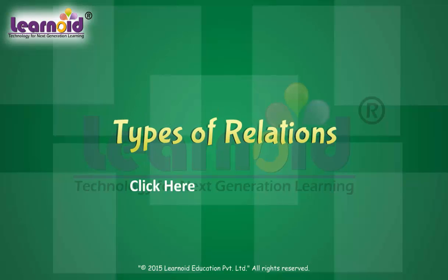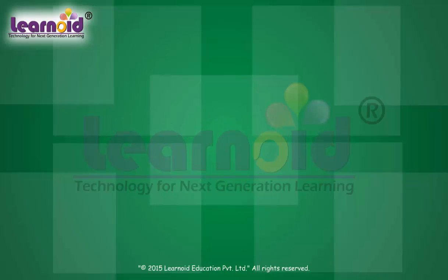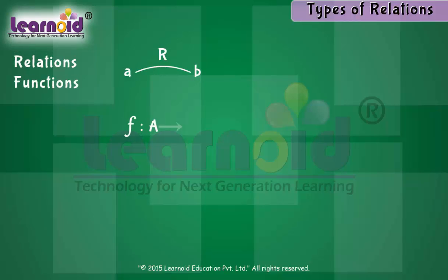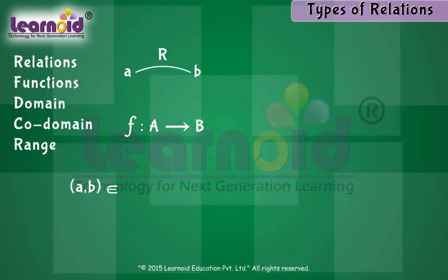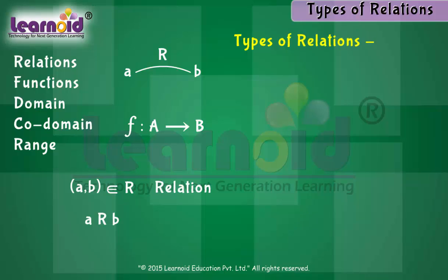Type of Relations. In class 11th, we have learnt the concept of relations, functions, domain, codomain and range. If AB belongs to R, we say that A is related to B under relation R, and we write it as ARB. Now, we will learn different types of relations and functions.